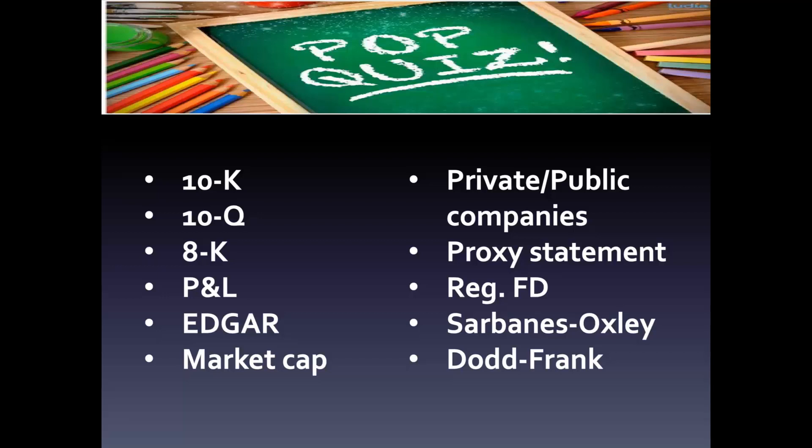EDGAR — the Electronic Data Gathering and Retrieval database — is where all this information can be found. You can go to Google, type 'EDGAR,' and get to the home page on the SEC servers. Type the name of any company and get all its information — the same way as any other investor, whether it's a financial analyst from Wall Street or a teacher in Iowa. Everybody has equal access to information from EDGAR.